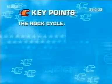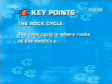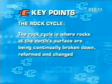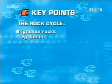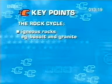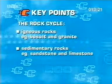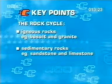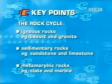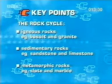The rock cycle is an ongoing cycle of events over millions of years, where rocks at the earth's surface are being continually broken down, reformed and changed. Examples of igneous rocks are basalt and granite. Examples of sedimentary rocks are sandstone and limestone, which are cemented together. And examples of metamorphic rocks are slate and marble, which have been compressed and heated.